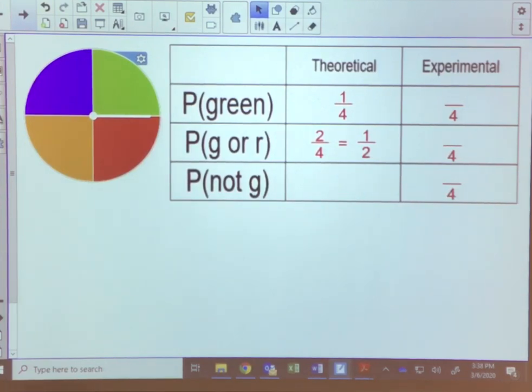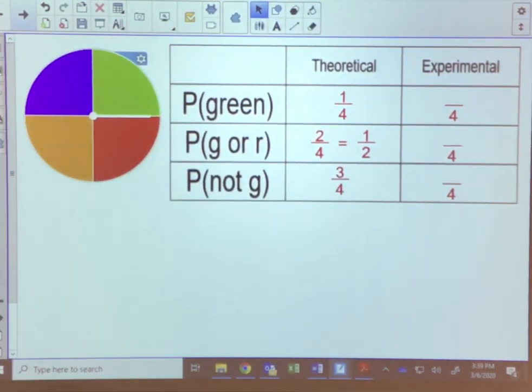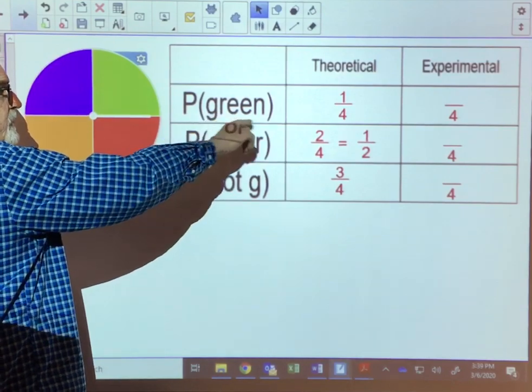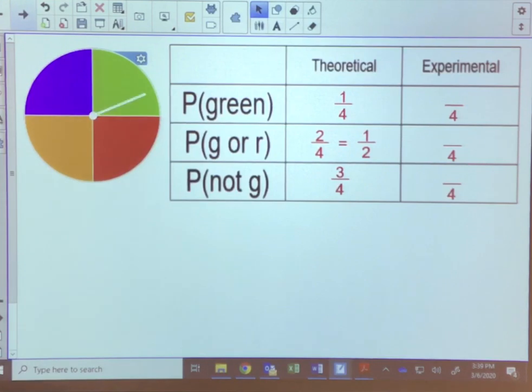And then probability of not green. We want anything but a green. Well, there's three colors that aren't green, so that would be a probability of three out of four. Let's try experimental probability with the probability of getting a green. Theoretically we said it should happen one out of every four times.